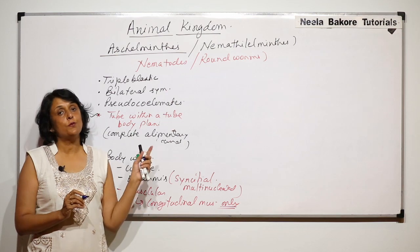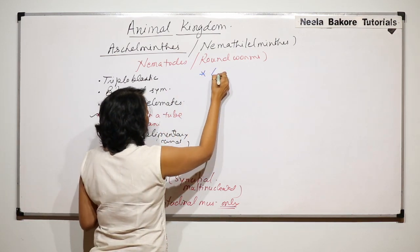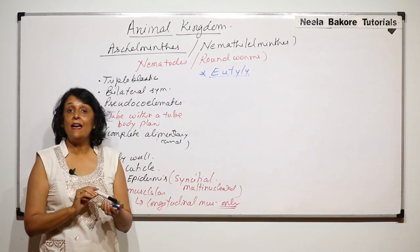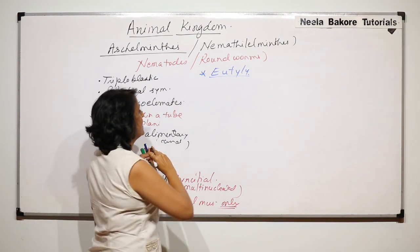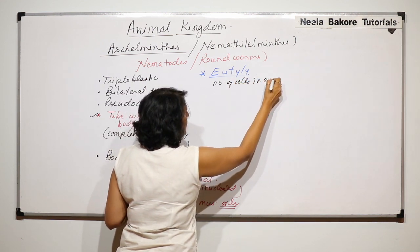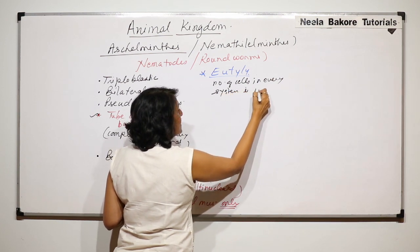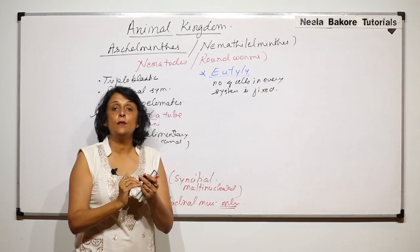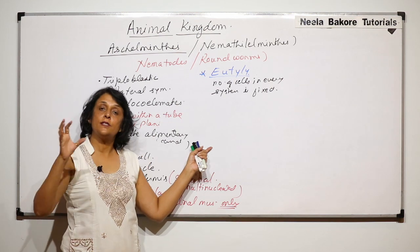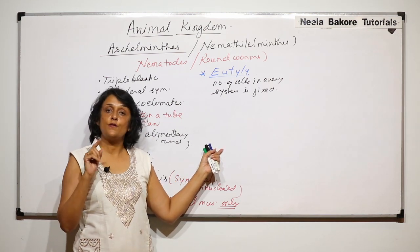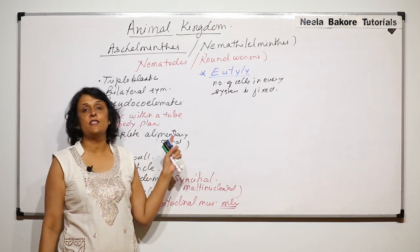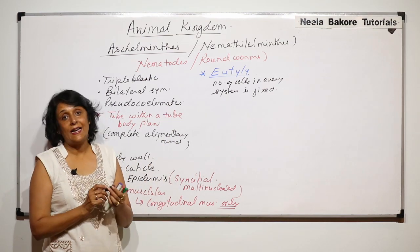Another very important and unique feature of this phylum is eutely. Eutely means the number of cells in every system remains fixed. For example, if a particular system has 10 cells, from the time the roundworm is formed until it is fully grown, the number of cells in that system remains 10. This property, known as eutely, is a very unique feature of Aschelminthes.